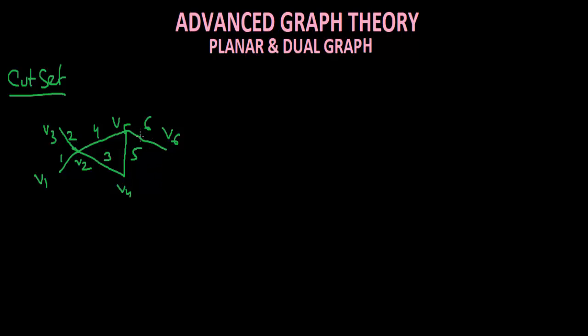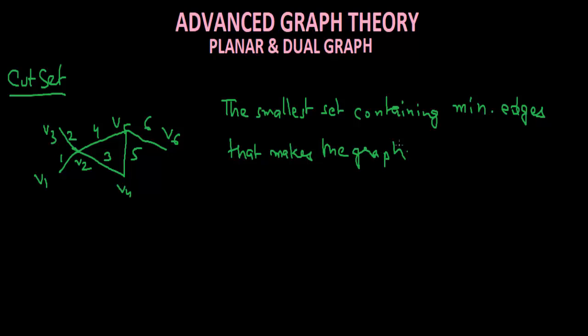So what is cut set? The smallest set containing minimum edges that makes the graph disconnected. So here we see that e3 and e4, or e4, e3 and e5. If you remove e4, e3, that is 3, 4 and 5, the graph will become disconnected. But if you remove 3 and 4, then also the graph will become disconnected. But since it is smallest, so we will take this. So this will be considered as our cut set.